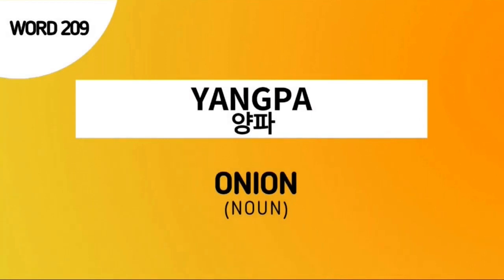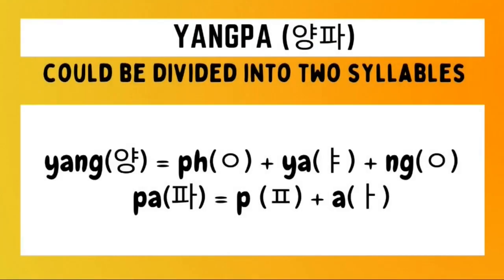Our word for today, yangpa, is simply the Korean term for onion. How do you write yangpa in Hangul? For the syllable yang, we draw a placeholder or no-sound, followed by the yang character, then another yang character. For the second syllable pa, we draw a p character followed by an a character. Then we combine the Hangul for each of these two syllables to form the Hangul of the word yangpa.